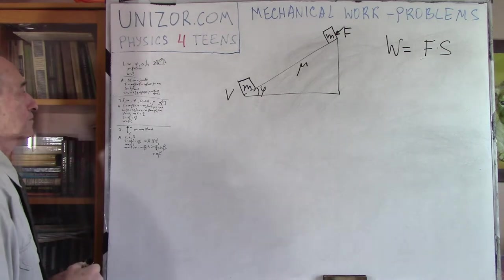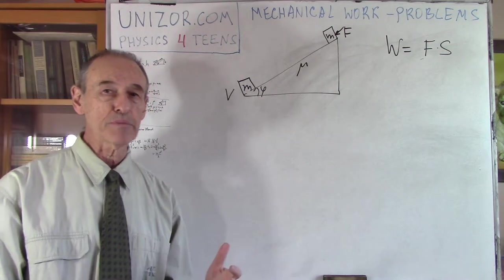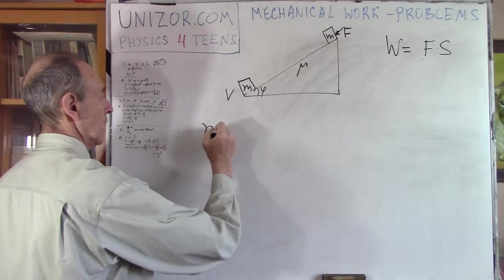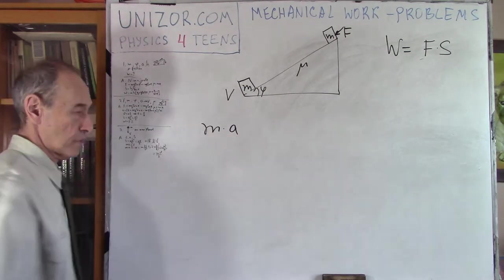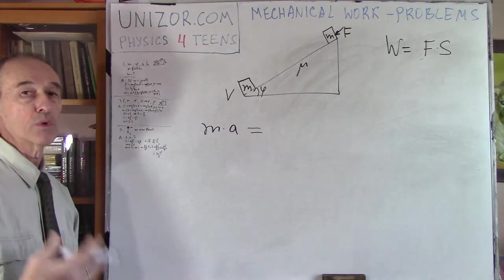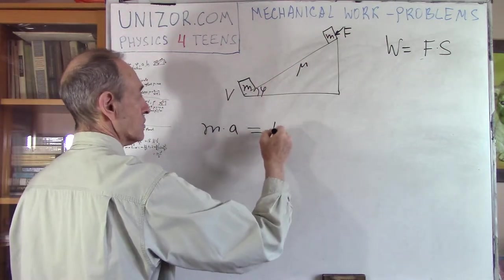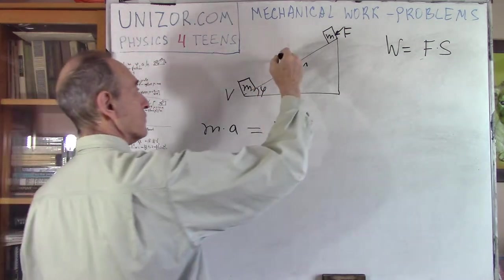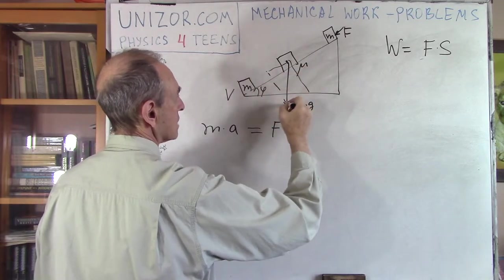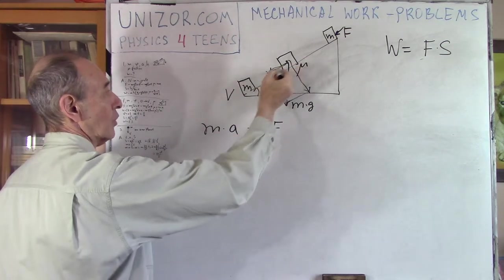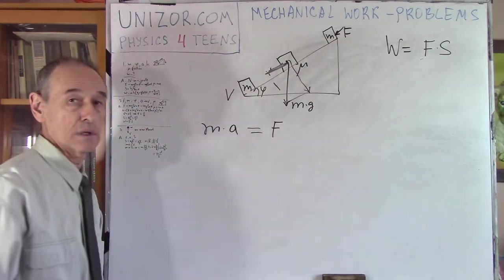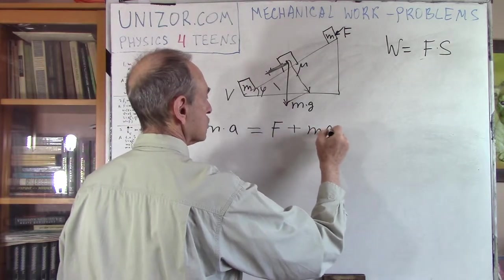So, first of all, what we can say is we can write more or less the same type of equation based on the second Newton's law and basically see what happens. Again, m times a, where a is acceleration of the movement along this surface. It's equal to the sum of all the forces which are acting. Now, obviously, our force f is acting. What else is acting? Well, if the body is, object is here, then this is its weight. Then, again, two components, one is parallel, another is perpendicular to the slope.